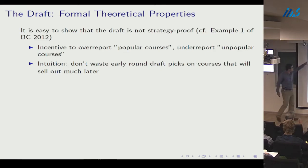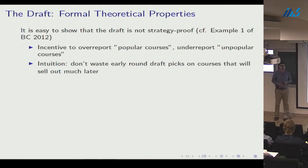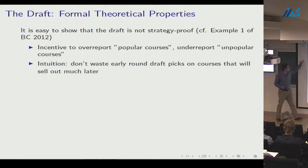It's easy to show the draft is not strategy-proof. There's an incentive to over-report preferences for popular courses and under-report preferences for unpopular ones — you don't want to waste early-round draft picks on courses you can get in later rounds.